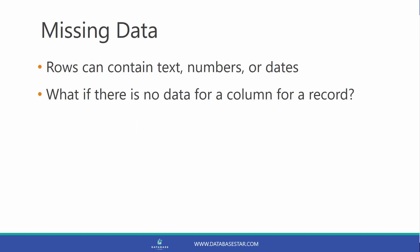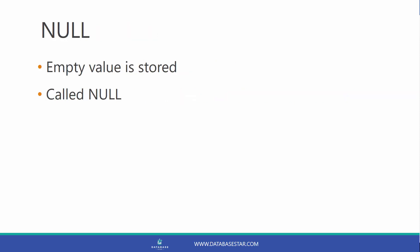What is NULL? In our tables, we have rows that contain data. And as you can see in the rows, they contain text, numbers, or dates. But what if there is no data for a particular column or record? What is shown? If there is no data, an empty value is stored. This is called NULL, and it means there is nothing stored in this column for this record.